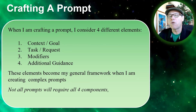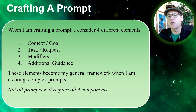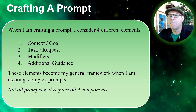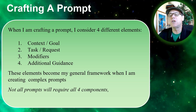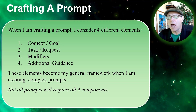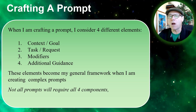Now when crafting a prompt I consider four different elements: the context or goal of the prompt; what I want it to do — the task, the request; modifiers, which is kind of how I want my output to look; and then some additional guidance — what kind of other instructions am I going to give? Not all prompts are going to require all four of these elements, but these are the ones that I find in my more complex prompts that I keep coming back to.